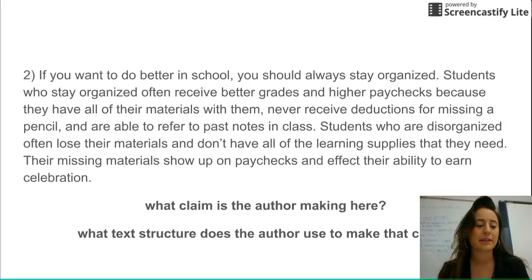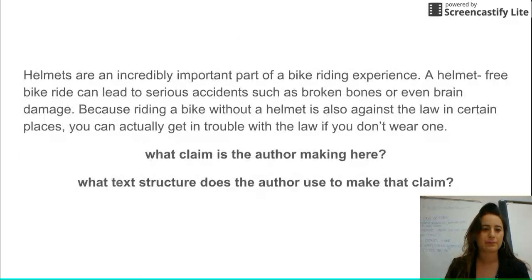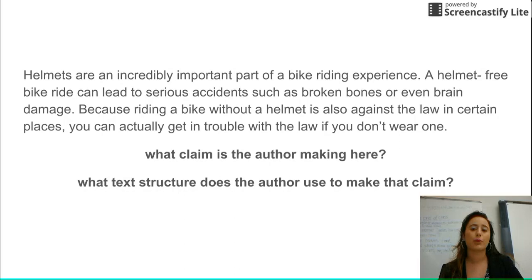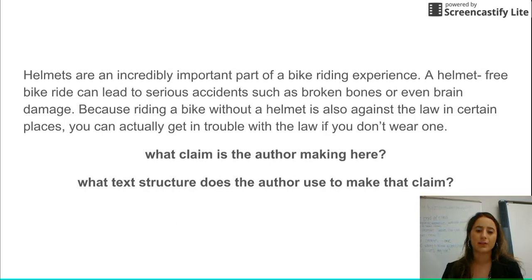Make sure that you're jotting down these notes right in this box — claim, structure, claim, structure — and then we have one more. Helmets are an incredibly important part of a bike riding experience. A helmet-free bike ride can lead to serious accidents such as broken bones or even brain damage. Because riding a bike without a helmet is also against the law in certain places, you can actually get in trouble with the law if you don't wear one. What claim is the author making here? And what text structure does the author use to make that claim?